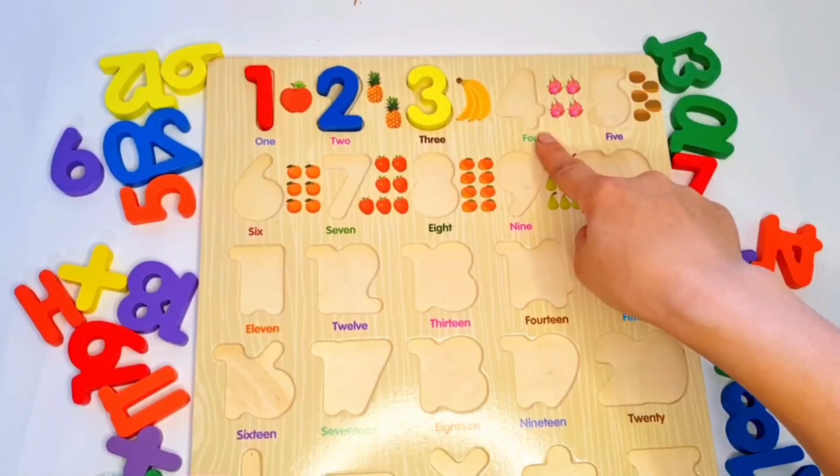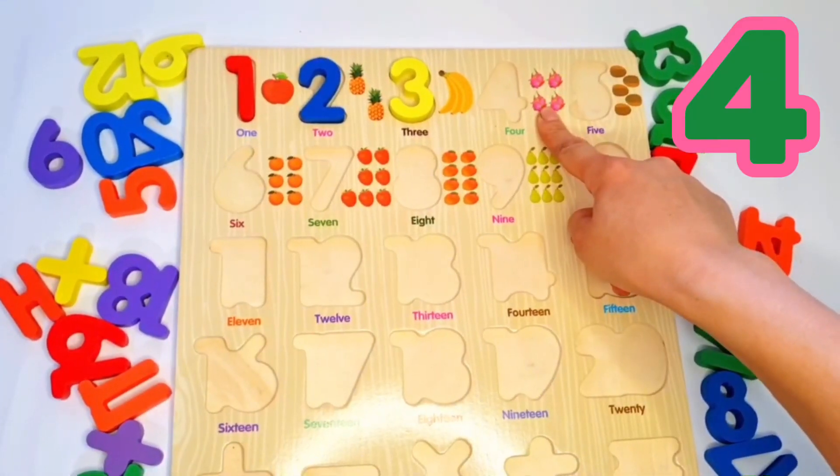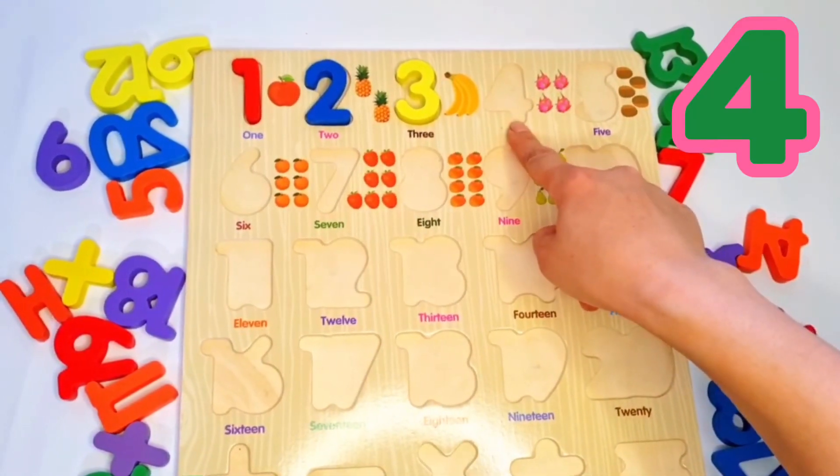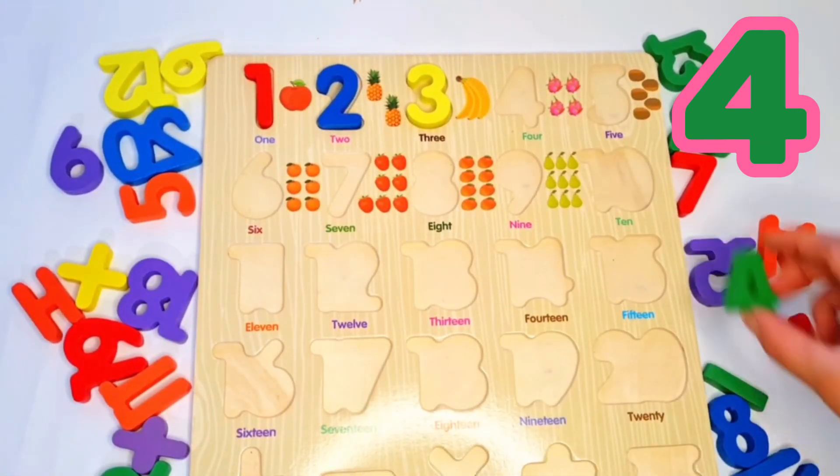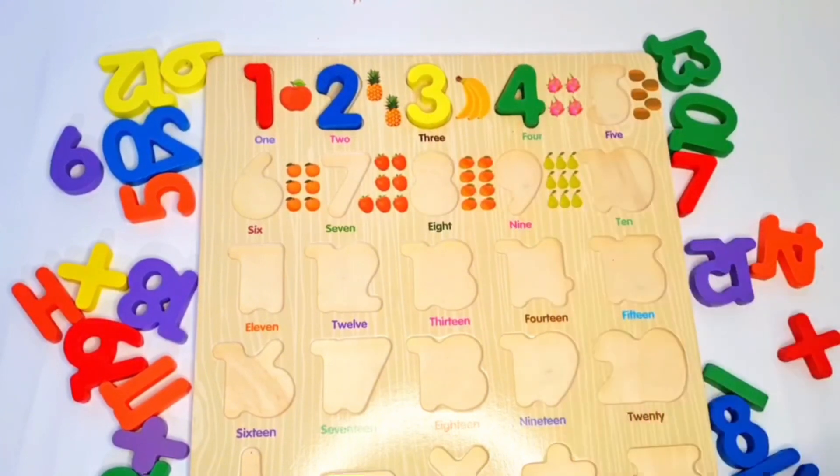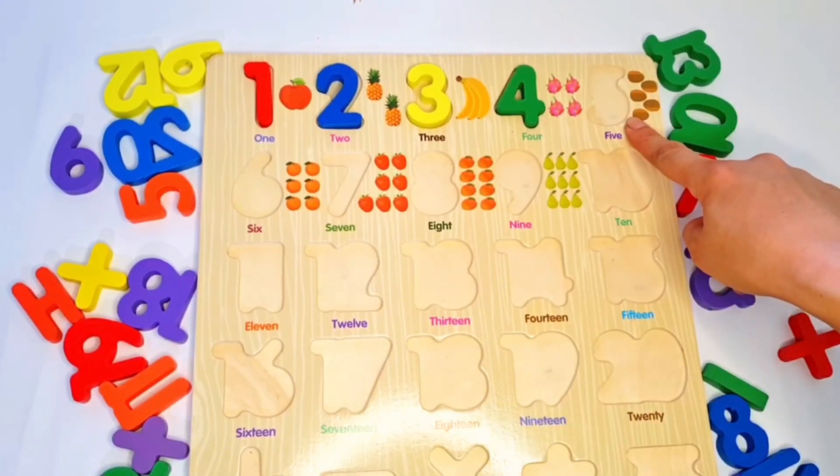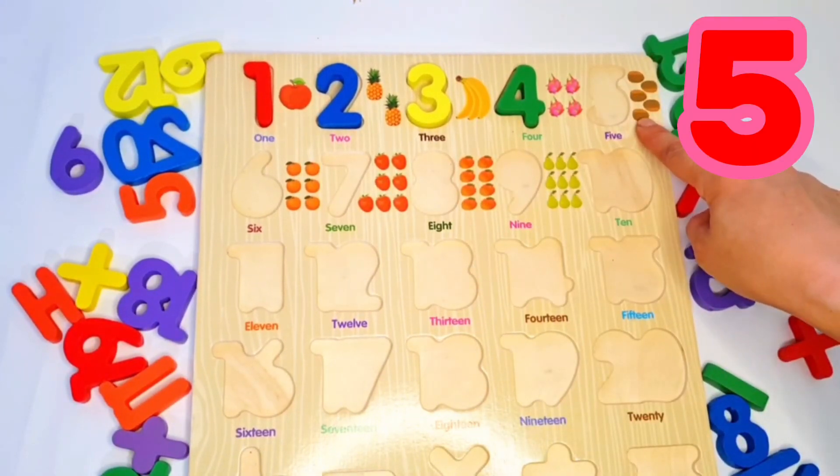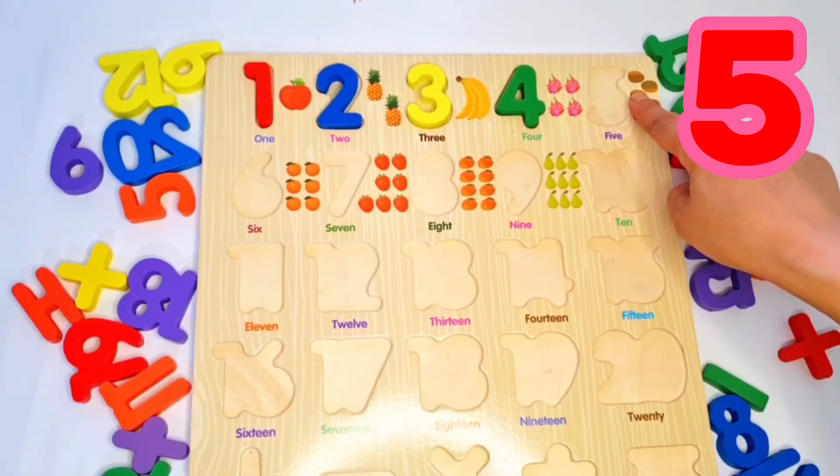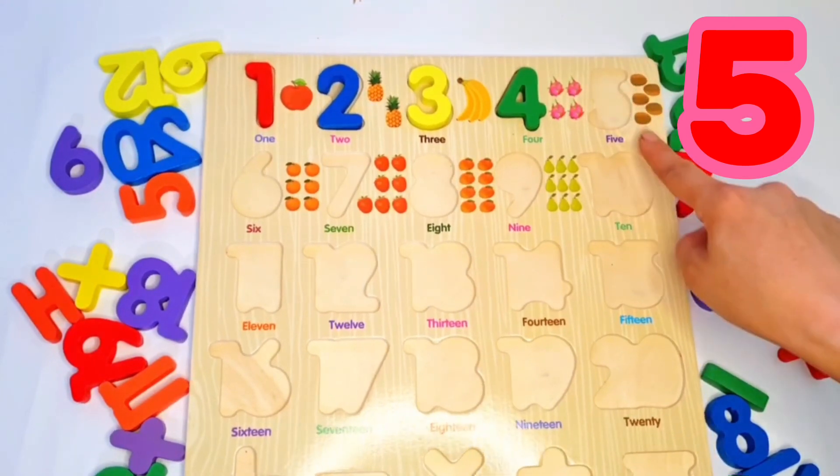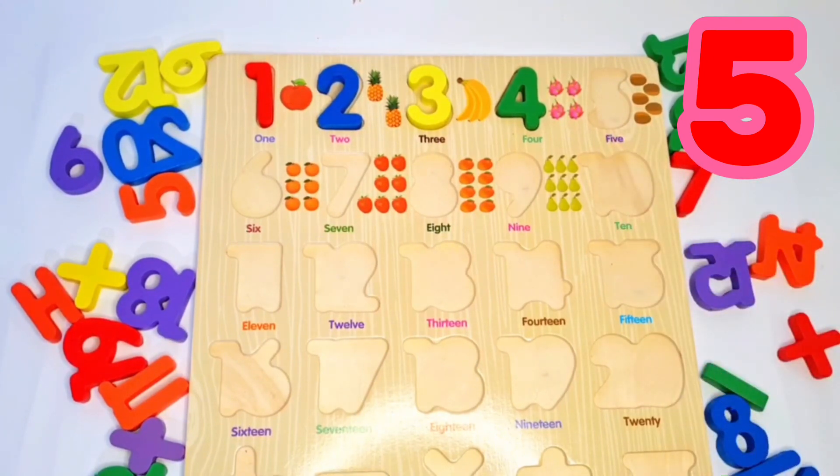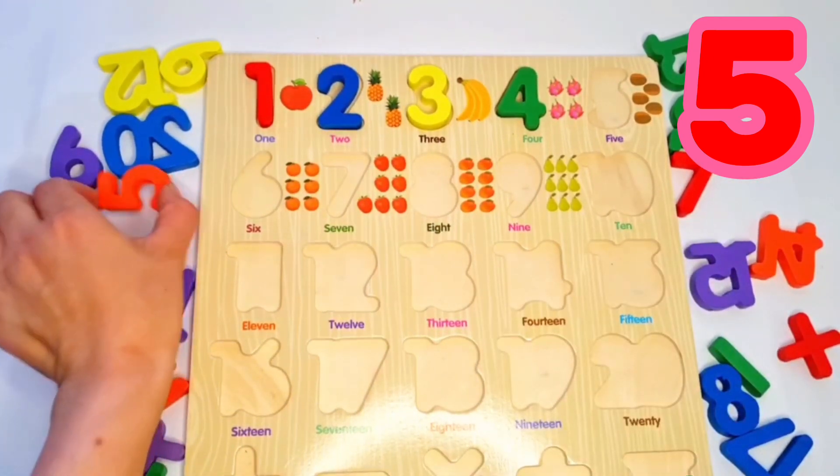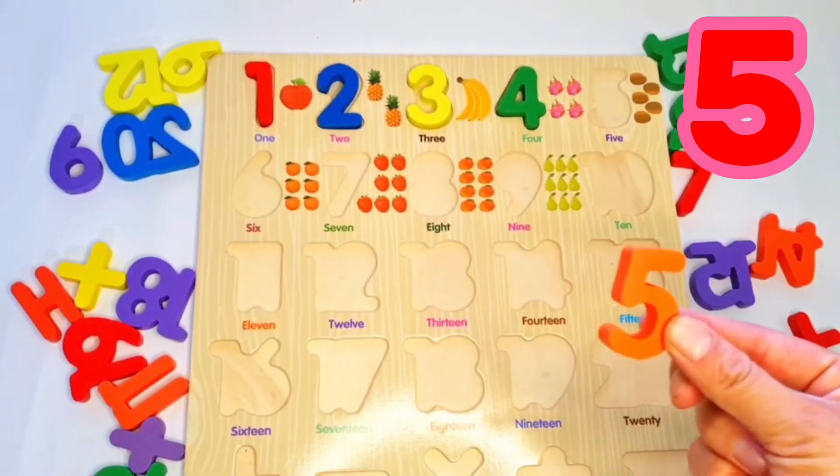Our next number is four. Dragon fruits, we must put here four, number four. And our next number, one two three four five. Five kiwi, here we put five, number five. Orange number five.